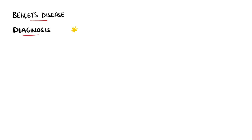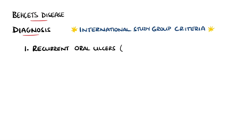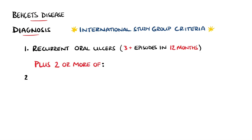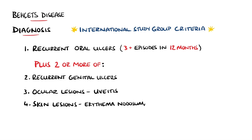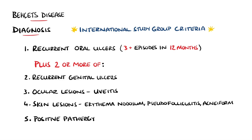The diagnosis is based on the International Study Group criteria, which requires recurrent oral ulcers as well as two or more of the following: recurrent genital ulcers, ocular lesions such as uveitis, other cutaneous manifestations such as erythema nodosum, pseudofolliculitis, or acneform lesions, or a positive pathergy test.